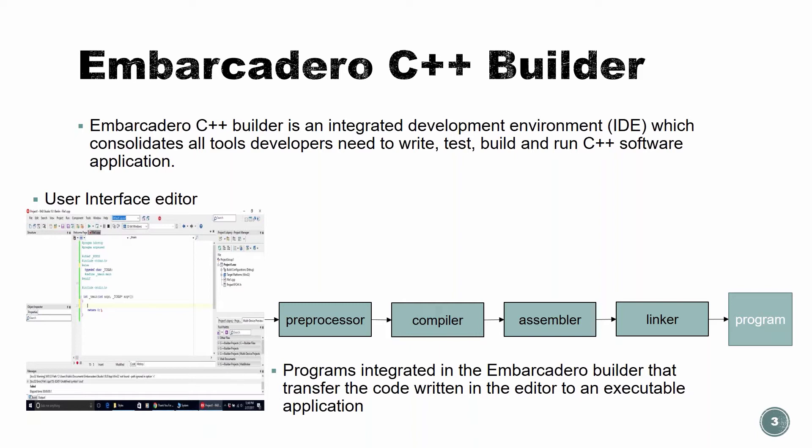We're basically going to do those steps. I'm not going to go into too much detail, but in a few words: the first step, once we build our program to make it executable, is the preprocessor. It goes over our code and looks for all the hashtags. Hashtags provide information for the preprocessor to include files we need or to change macros. That would be the first step.